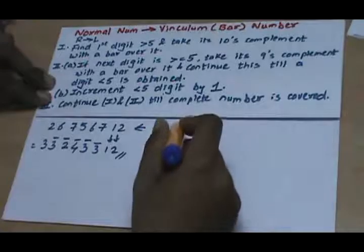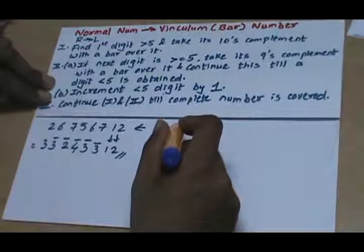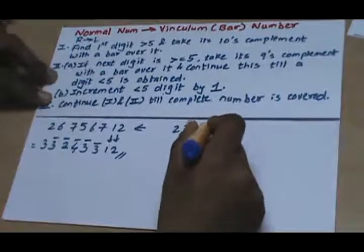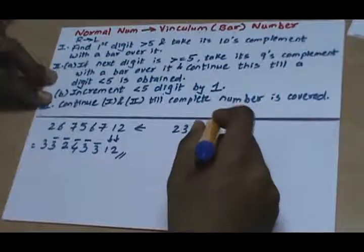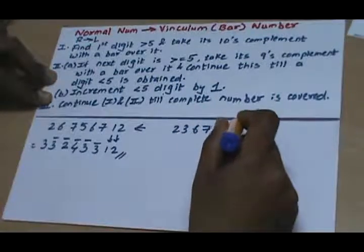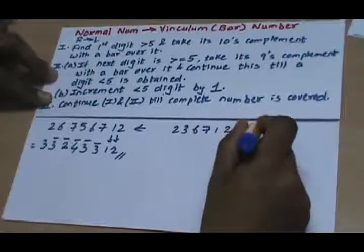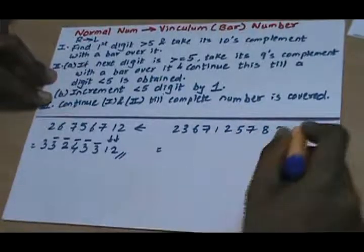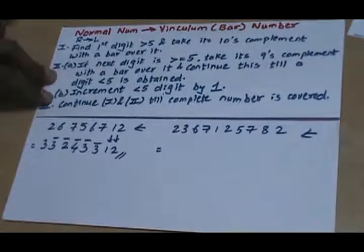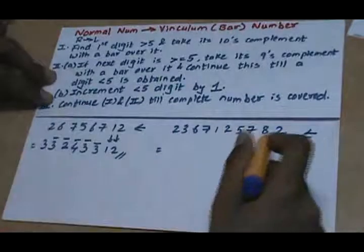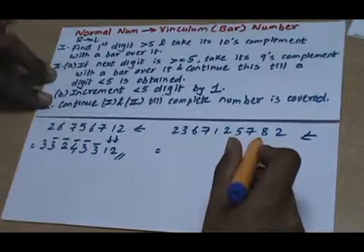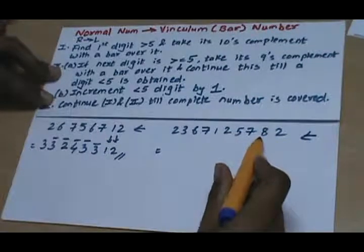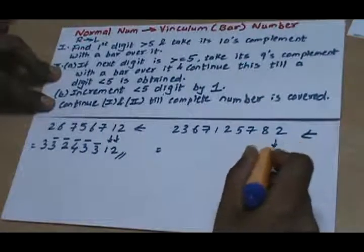Let's take another number: 2367125782. Again we follow a right-to-left approach and find the first digit which is greater than 5. In this case, 8 is the first digit, so we write 2 as it is.